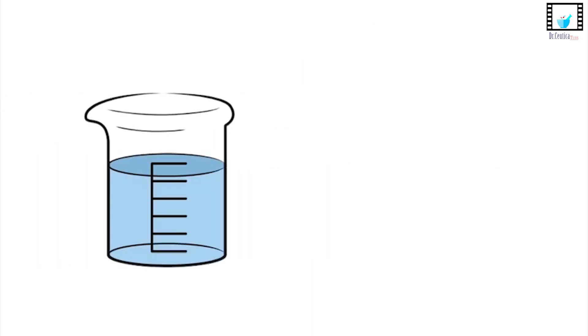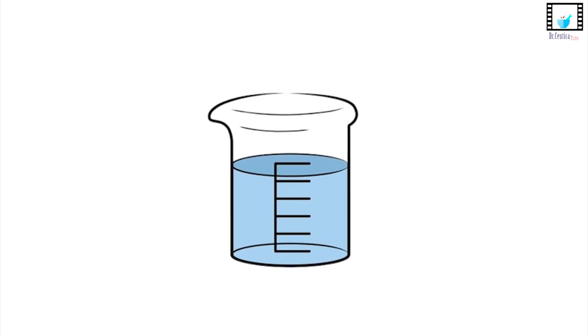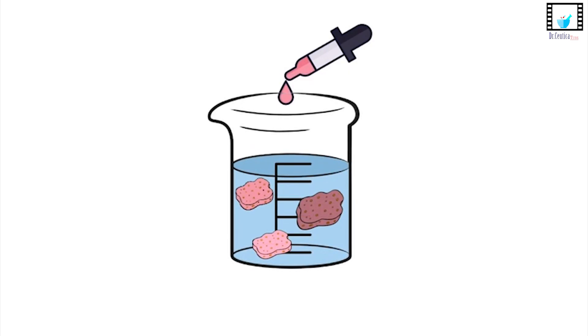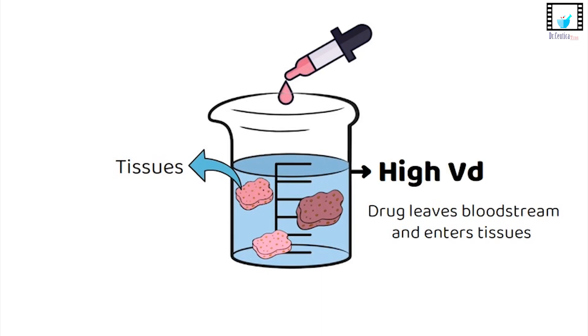Now imagine your beaker isn't empty. It's got sponges submerged in the water. You drop in the same dye or drug but now the dye gets absorbed into the sponges, your tissues. Even though the total amount of dye hasn't changed, the water in the beaker looks more diluted because most of the dye is hidden away in the tissues. That's a high VD drug.